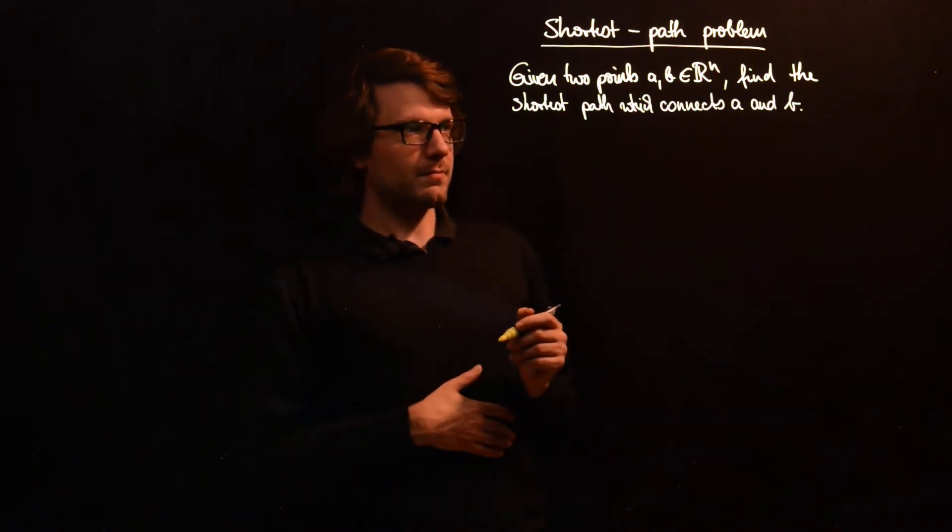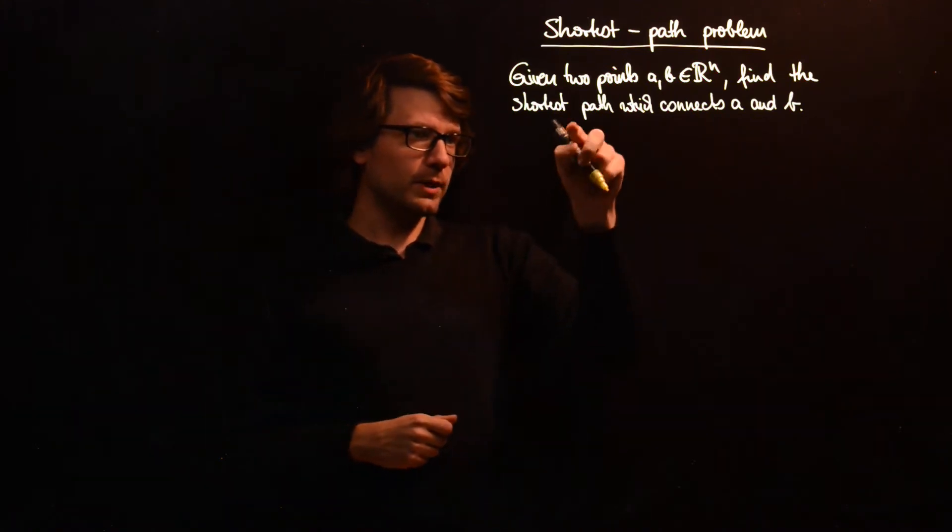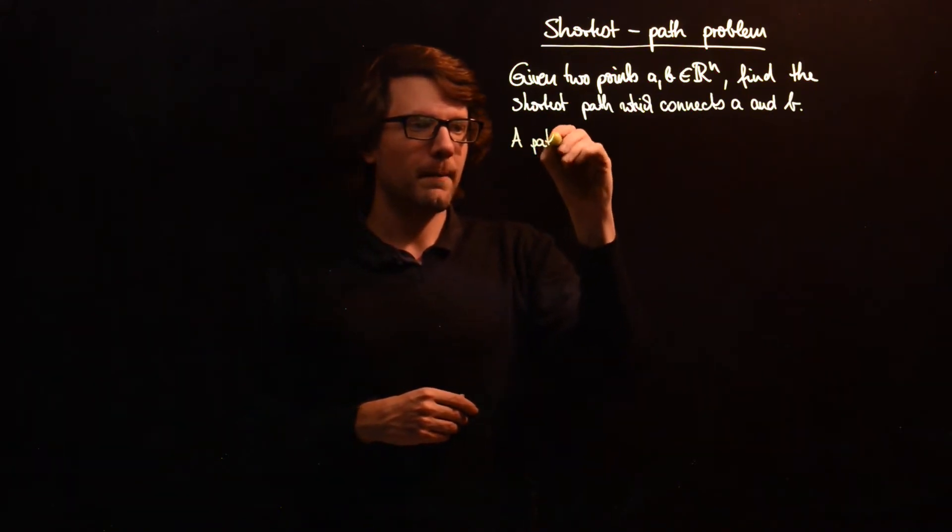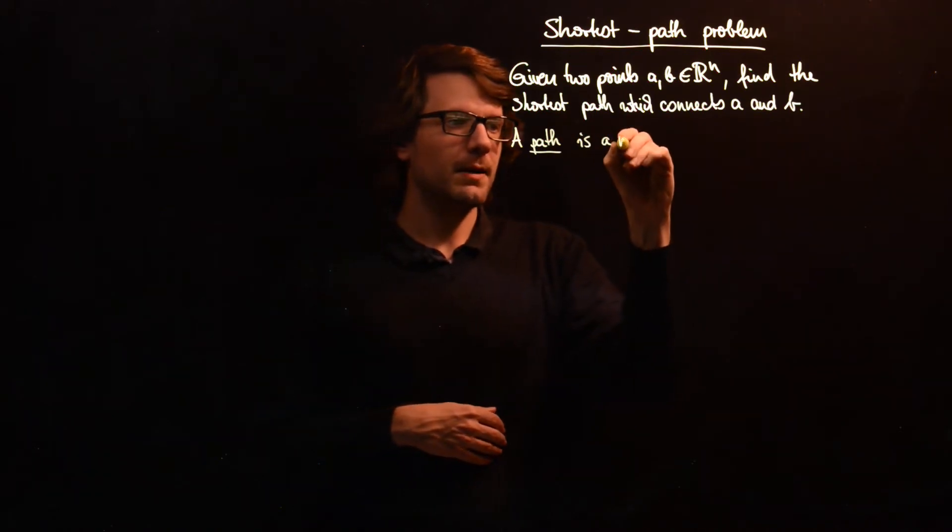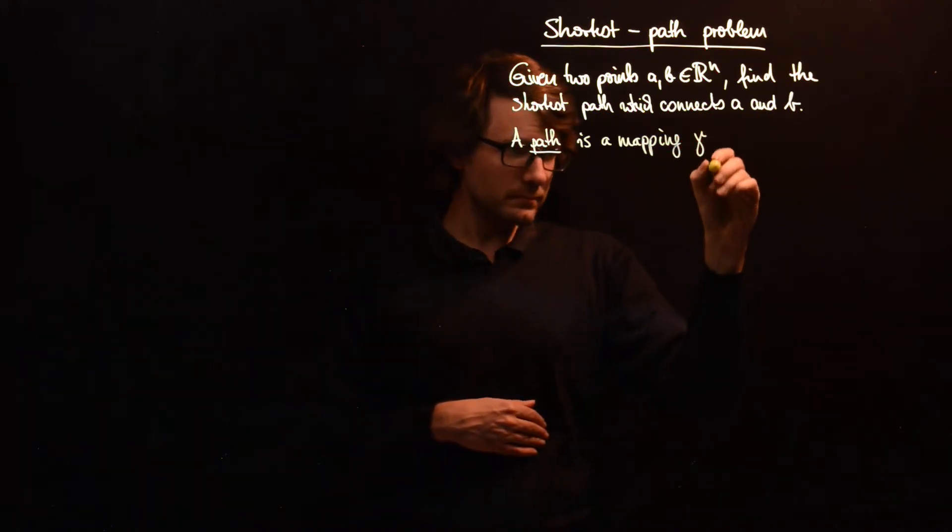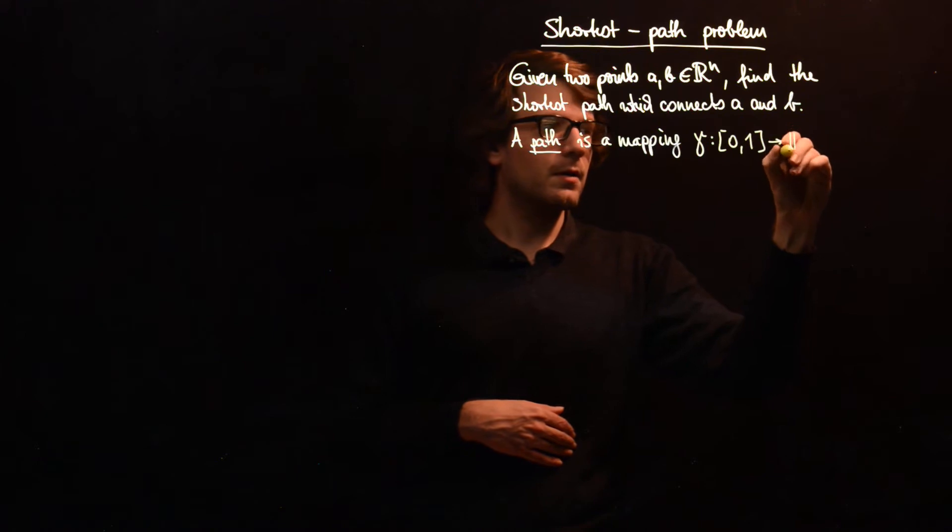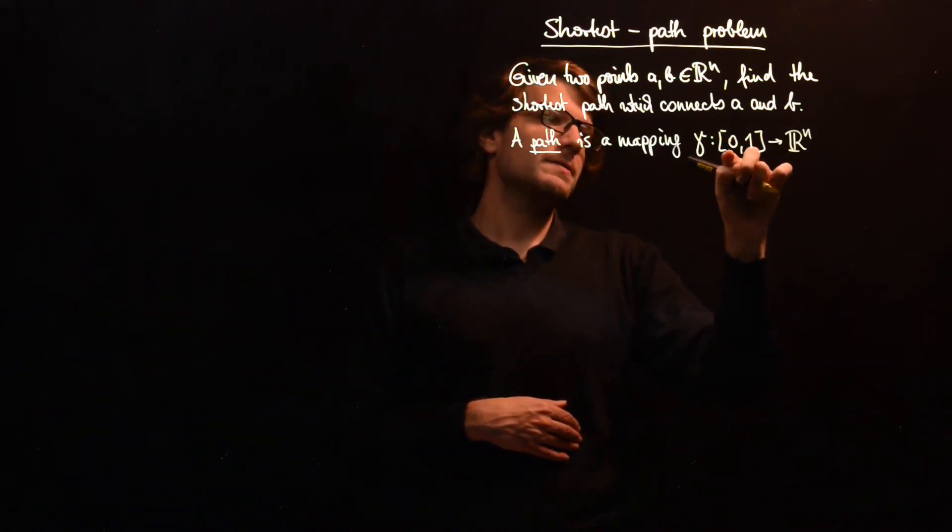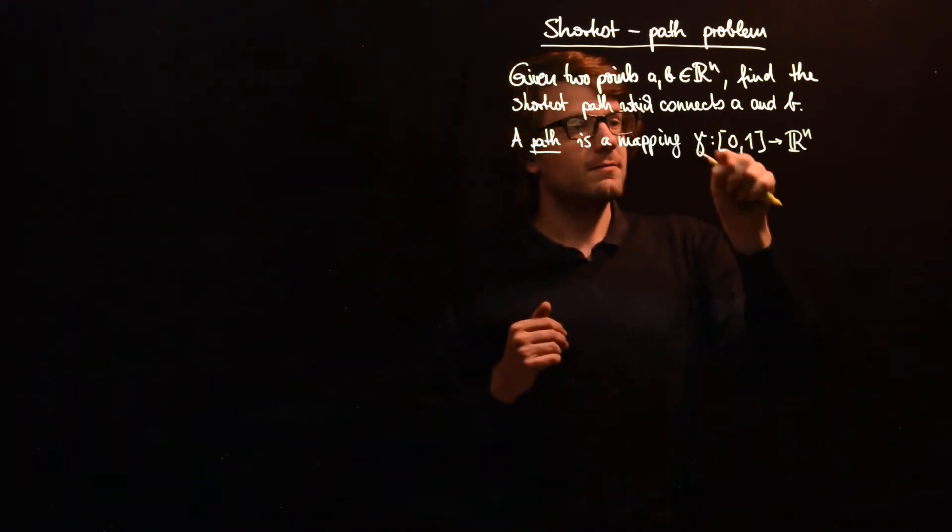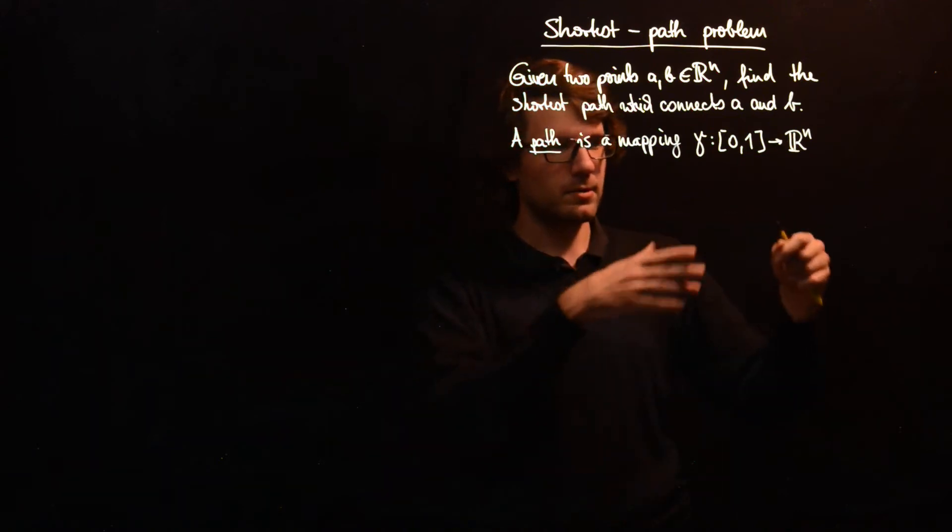So now we have to define all these words in the problem, and we begin with the notion of a path. So let's write: the path is a mapping gamma. We take some interval here between 0 and 1, for example. It doesn't really matter which numbers you write here, it's just that this interval is kind of a notion of time, and this is the space where the points A and B live, so that's our target space.